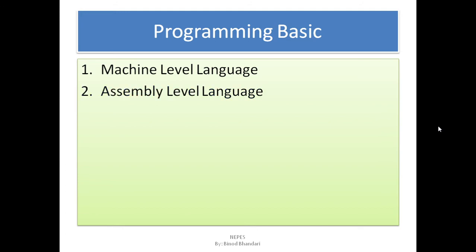Second is assembly-level language. It is a bit higher version of machine-level language and is made up of mnemonics like ADD, SUB, etc. This assembly-level language is finally converted into machine-level language with the help of a language processing software called an Assembler. Assembler is a language translating software that plays an important role in translating assembly-level language into machine-level language.